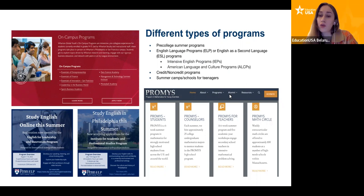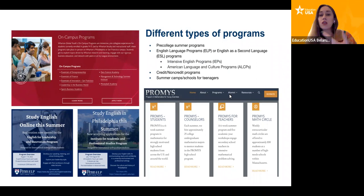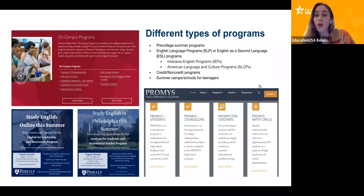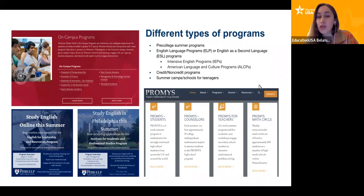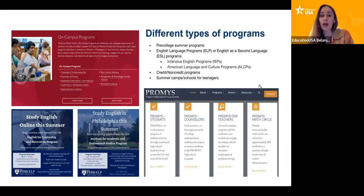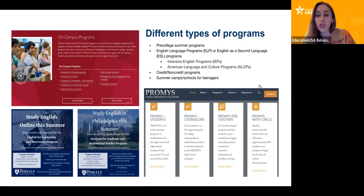ESL programs can be divided into intensive English programs and American language and culture programs. Intensive English programs mostly focus on mastering your English language skills — they have very intensive programs on grammar, speaking, reading, and all other parts of English learning. American language and culture programs let you know more about American culture and the college campus culture. Programs can give you credit for your future studies or not. You can also find programs focused on a specific subject area, like mathematics or biology. There are also summer camps or schools for teenagers.